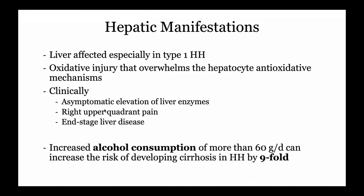People with hemochromatosis are really susceptible to other forms of liver damage, specifically alcohol consumption. People with hemochromatosis who drink alcohol have a ninefold higher risk of developing cirrhosis compared to those without hemochromatosis. So it's really important for us to talk to them about alcohol abstinence.